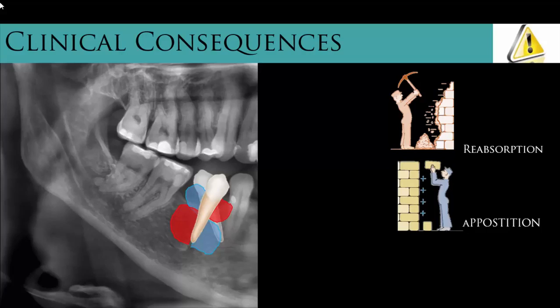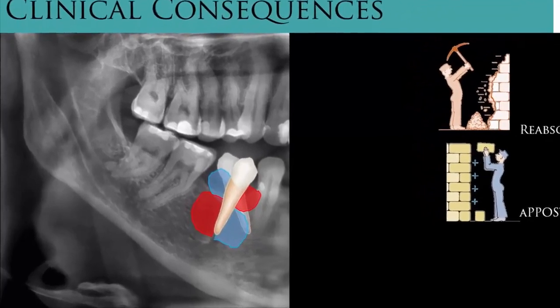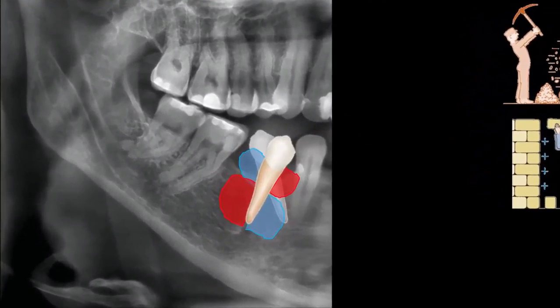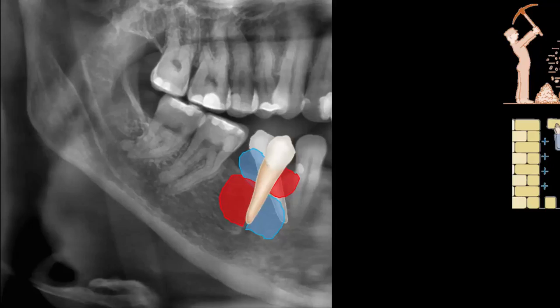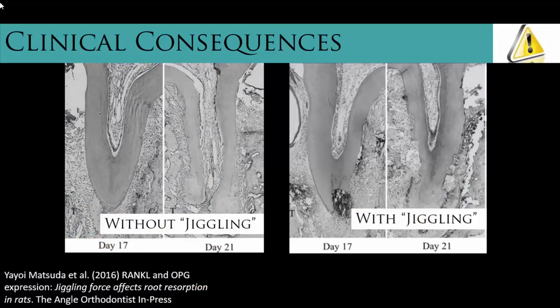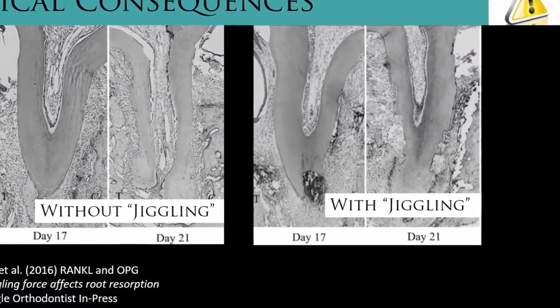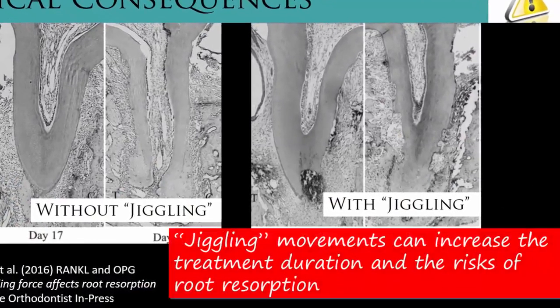Transforming a resorption area into apposition is usually simple. However, turning an apposition area into resorption may take longer because it only takes place after mineralization of the osteoid tissue that normally forms initially in apposition areas. In conclusion, these back and forth movements are not desired, as they extend the treatment duration and favor root resorption. We can see that in this study performed in rats, where the teeth that suffered back and forth movements presented much more root resorption than the teeth that hadn't undergone this movement.